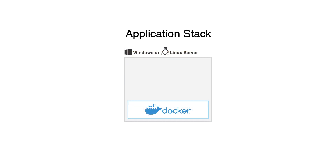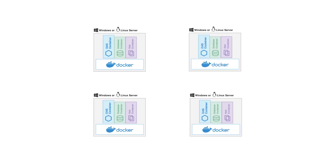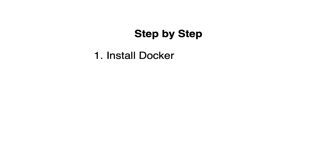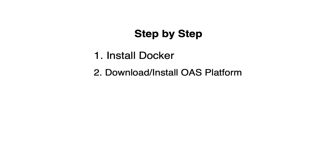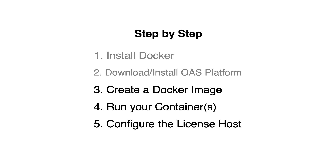Another typical use of containerized applications is creating what's called an application stack. Once you've created that stack, you can repeat the deployment by just taking the container image and passing it along from server to server. The steps for running OAS in a Docker container are: first, install Docker on your host operating system, either Linux or Windows. You also need an installation of the OAS platform — the .NET Core version — for Linux or Windows. You'll create a Docker image, run the containers, and configure your license host to manage licenses across all containers. In this video, we'll go step-by-step through creating the image, running the containers, and managing the license host.